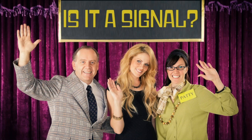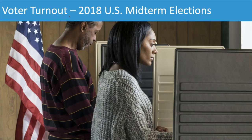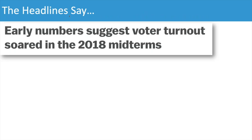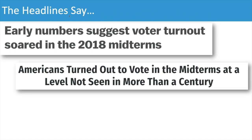Back to our game show: 'Is it a signal? Did something change significantly in the system?' We can answer that question with process behavior charts. I saw headlines about voter turnout in the 2018 U.S. midterm elections. Headlines said things like 'voter turnout soared' and 'Americans turned out to vote at a level not seen in more than a century' and 'the highest turnout since before World War I.' But some data point being the highest in X number of years doesn't necessarily mean it's statistically out of line with noise and routine fluctuation.